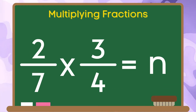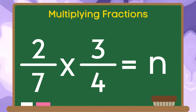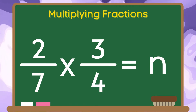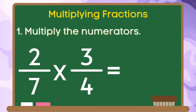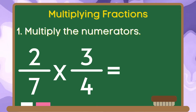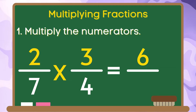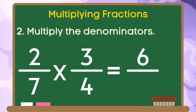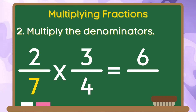Let us have another example. 2 sevenths multiplied by 3 fourths is equal to n. Let us do step 1. We are going to multiply the numerators. 2 times 3 is equal to 6. For step 2, let us multiply the denominators. 7 times 4 is equal to 28.